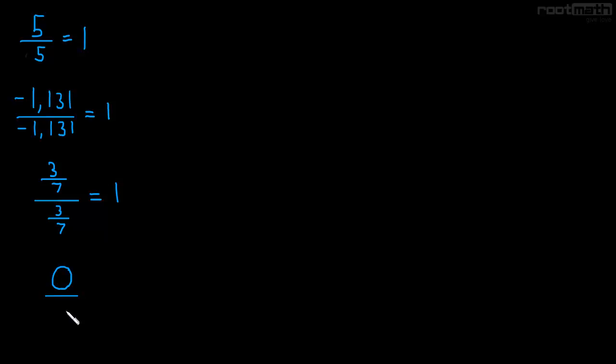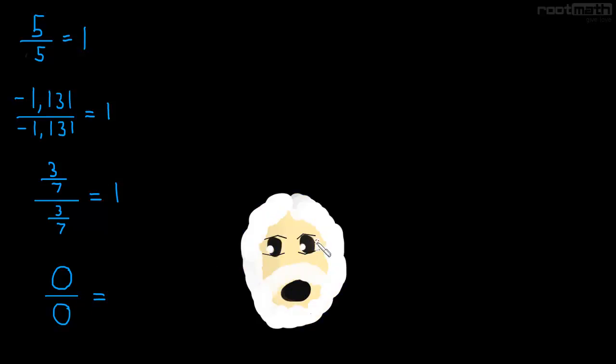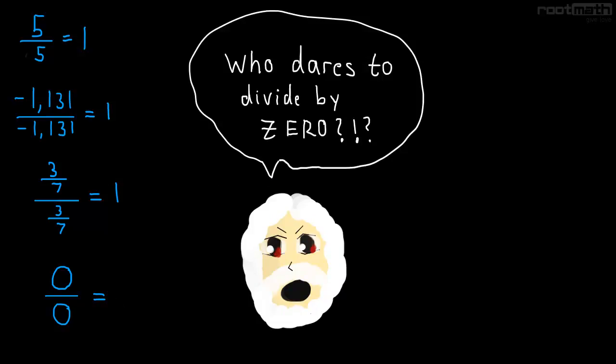What about 0? 0 divided by 0. Well, this is not equal to 1. This is the only exception, and it's because we can't divide by 0. If we tried to divide by 0, the universe would split open, and your mother would cry, and it just would be terrible. So, 0 divided by 0 is undefined, and that's the only exception.